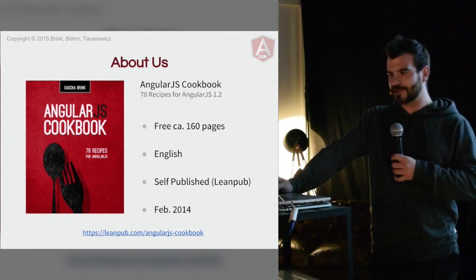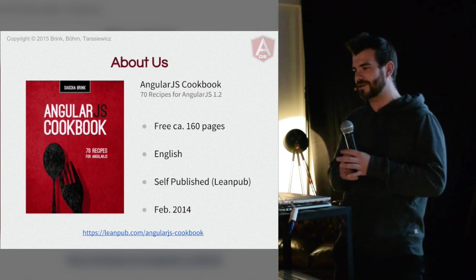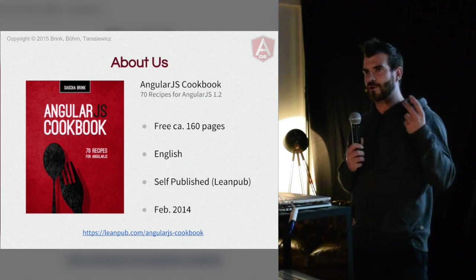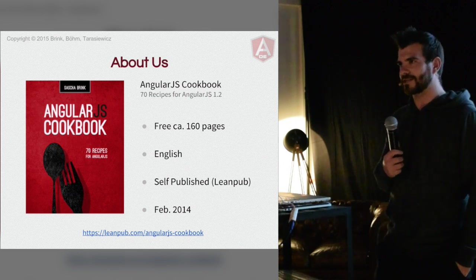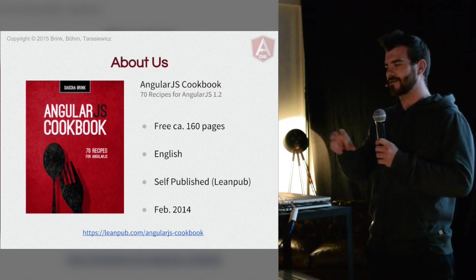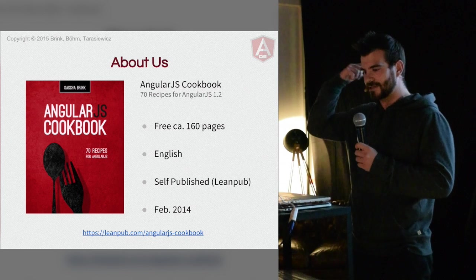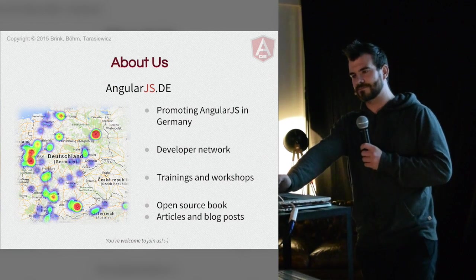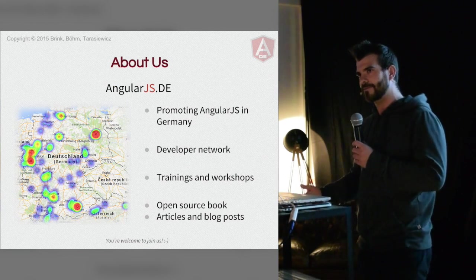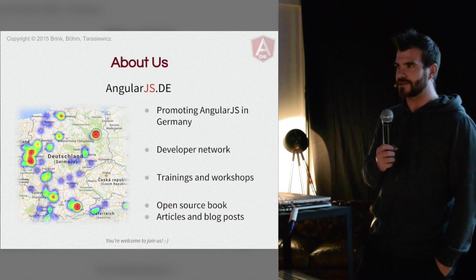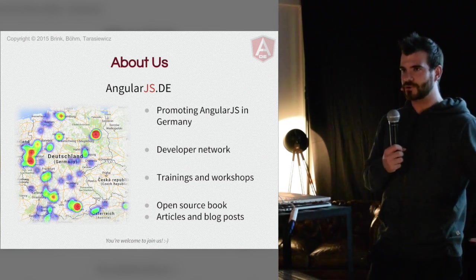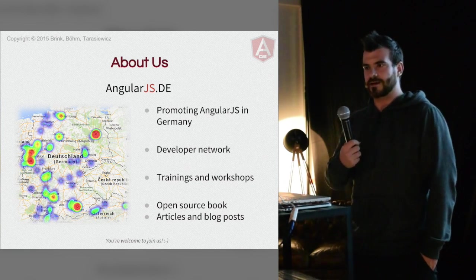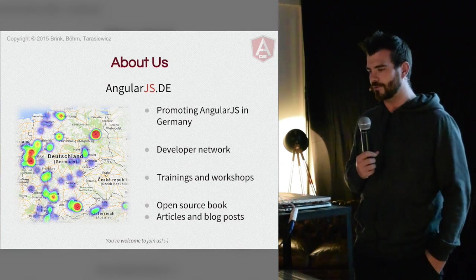A friend of ours, Sascha Brink, has written a book about AngularJS recipes - about 70 problems and solutions you encounter in AngularJS, everyday copy-paste things you can use. It's free on LeanPub, you can just download it. We're also providing a portal, AngularJS.de, where we write German articles and blog posts, run workshops, and have an open-source book where you can contribute and share knowledge about Angular.